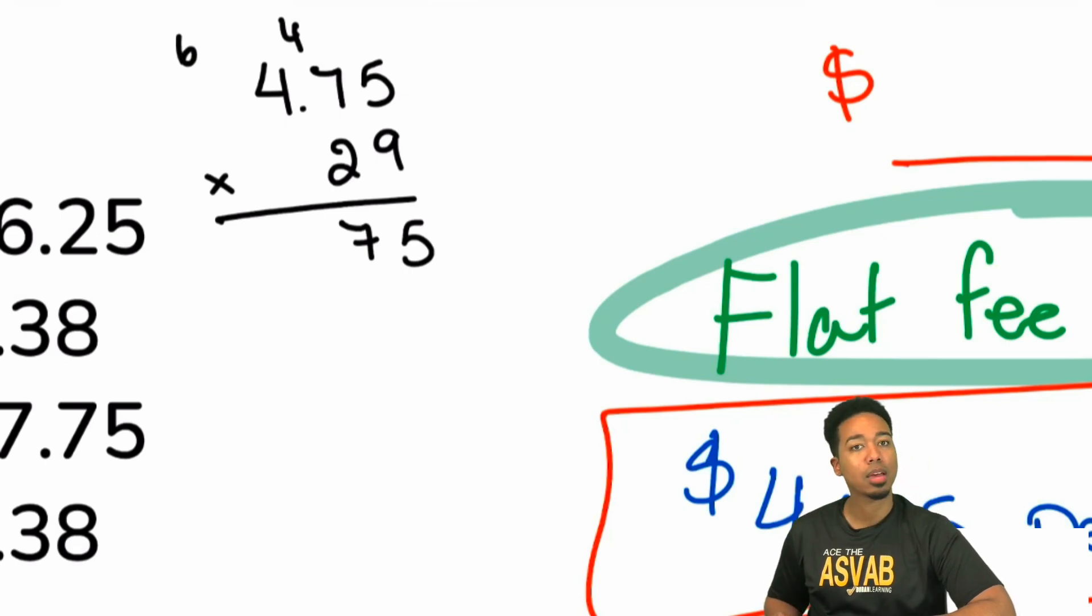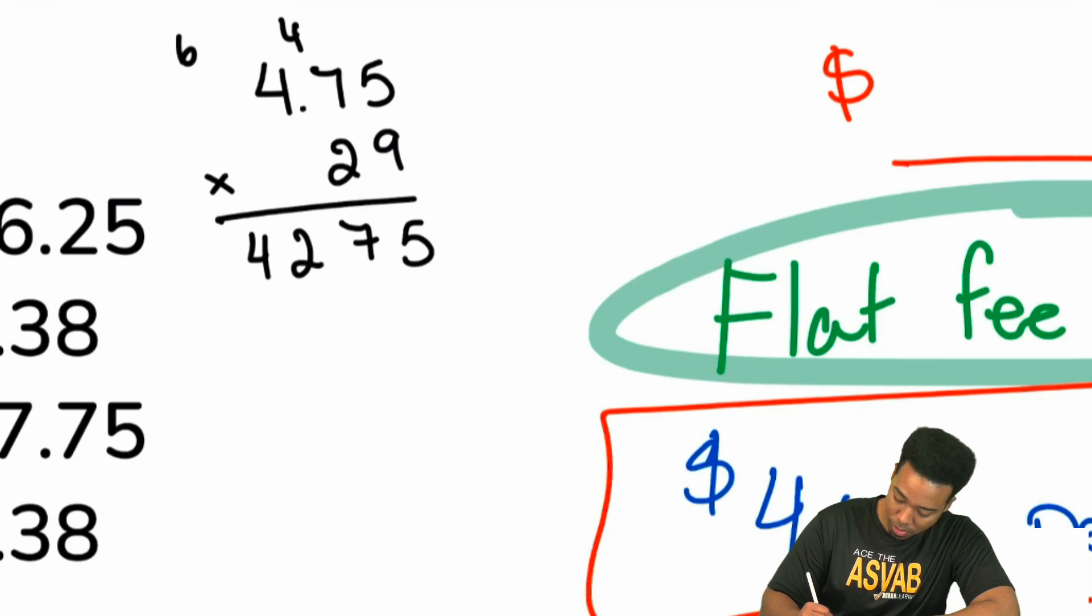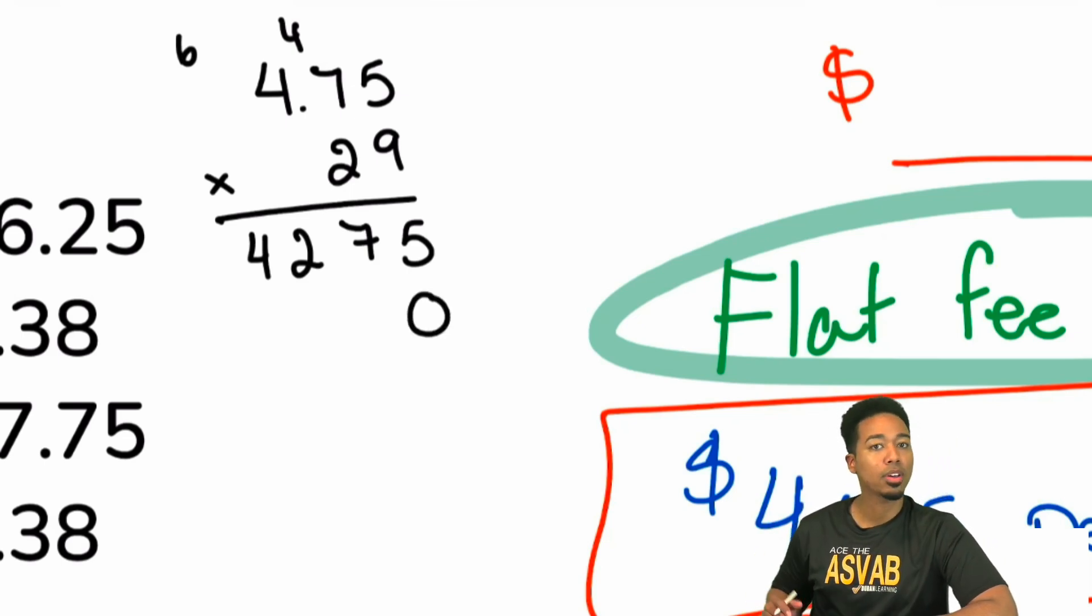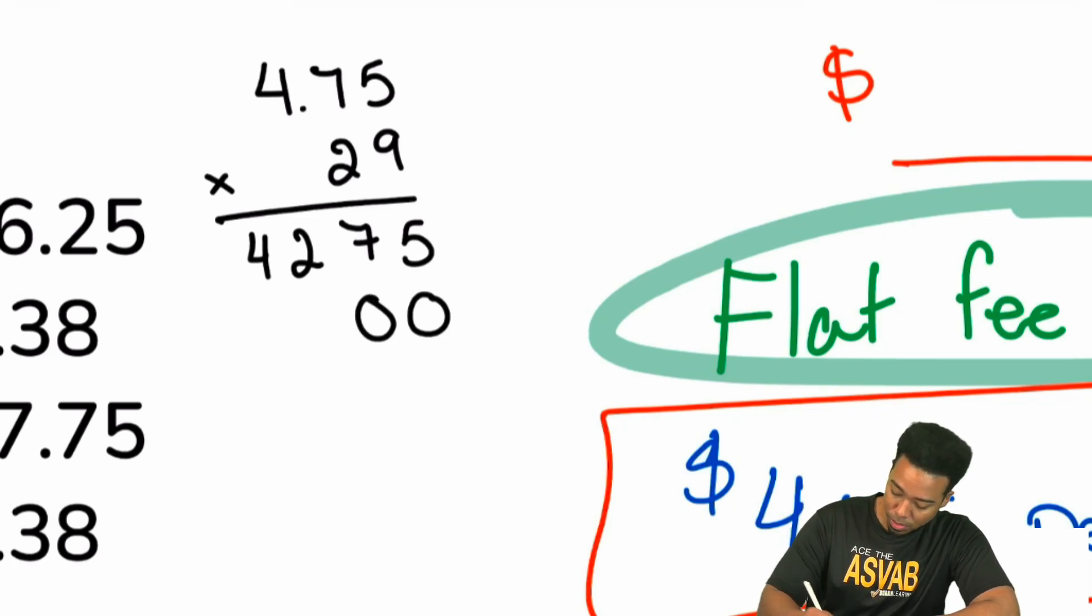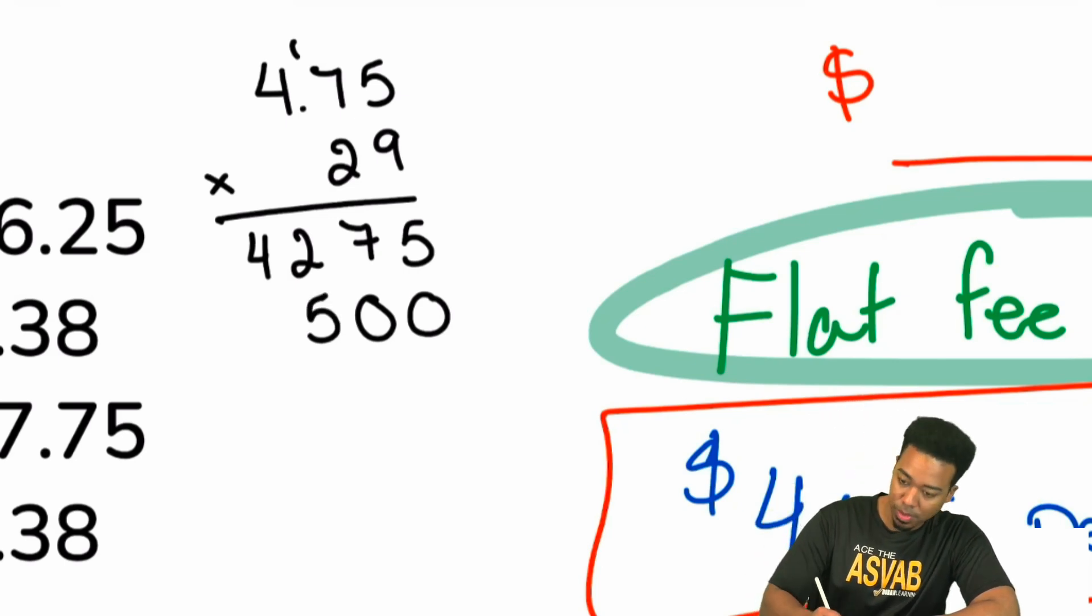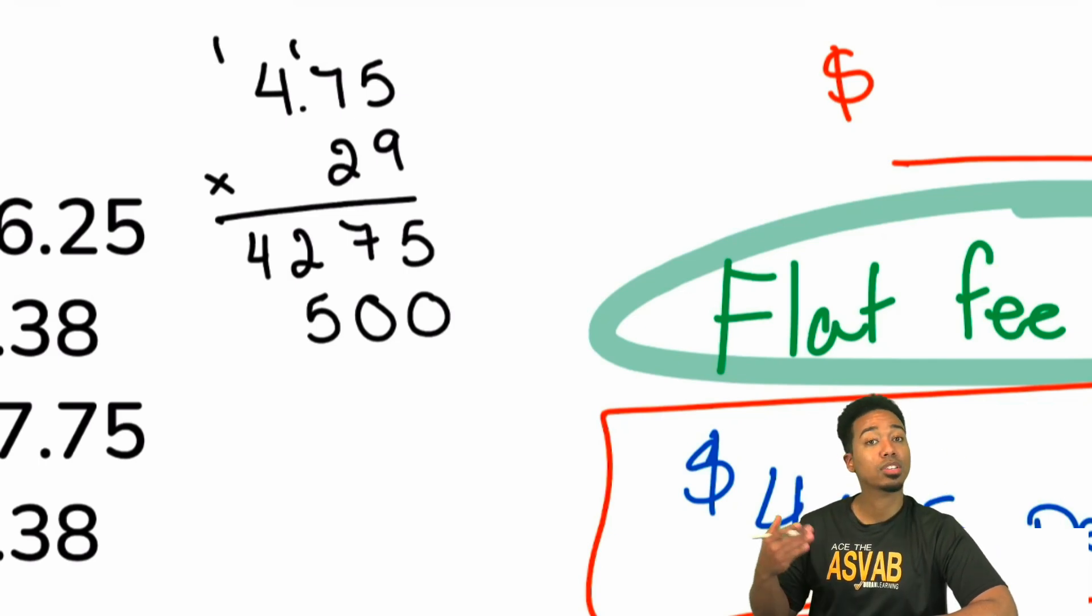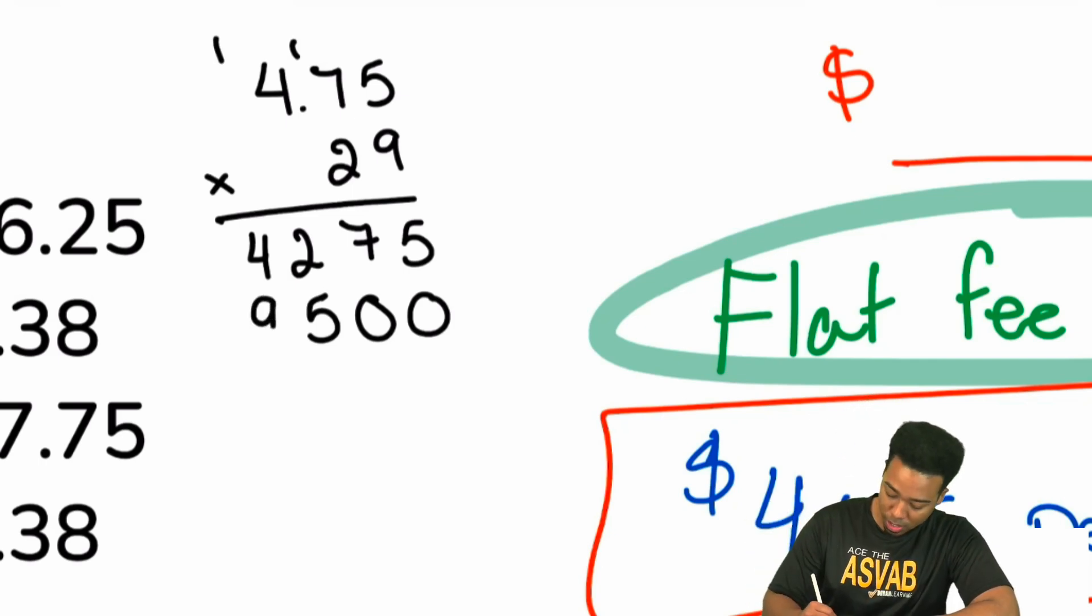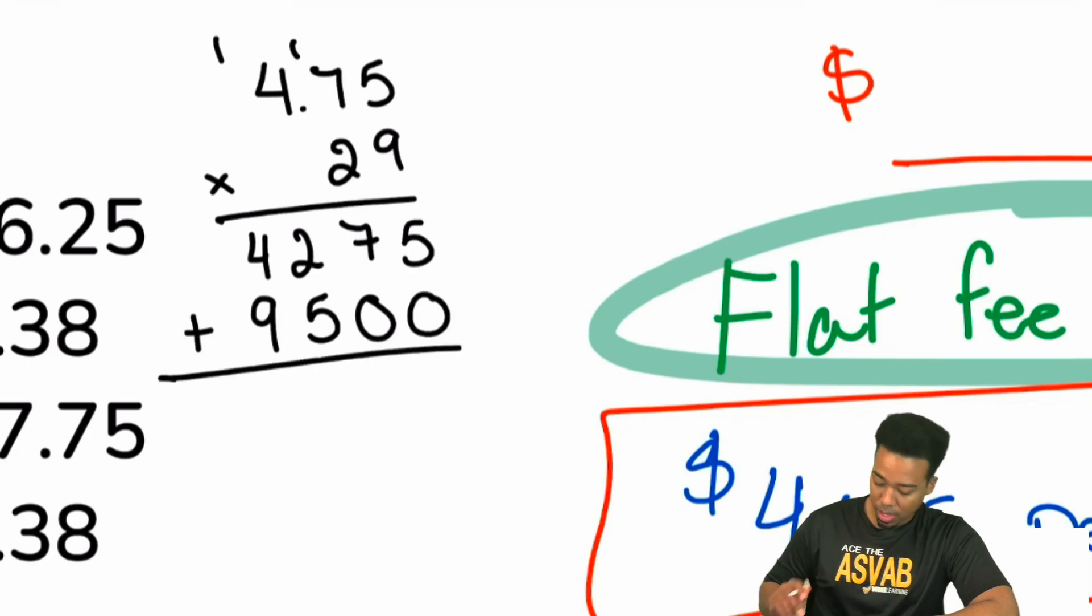Then 4 times 9 is 36. Carry the 6 is 42. So then from there, we'll go ahead and bring down a 0. And now we'll work on that 2. So we have 5 times 2 and that's going to be 10. Remove those. Then we have 7 times 2, that's 14. Carry the 1, that's 15. Then we have 4 times 2, which is 8. Carry the 1 is 9. Booyah.